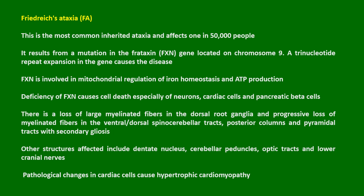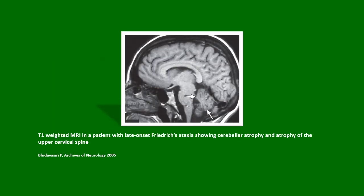Pathological changes in the cardiac cells cause hypertrophic cardiomyopathy. This is a T1-weighted MRI in a patient with late-onset Friedrich's Ataxia showing cerebellar atrophy and atrophy of the upper cervical spine.